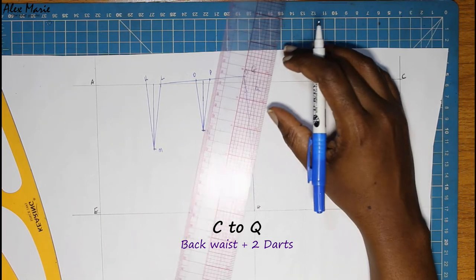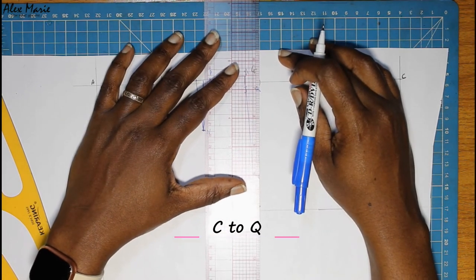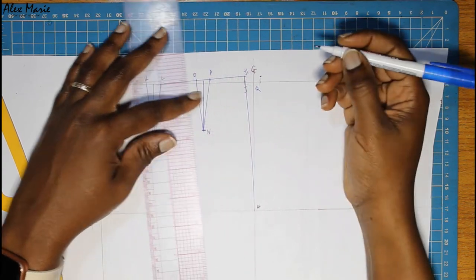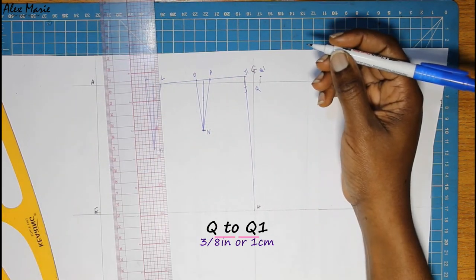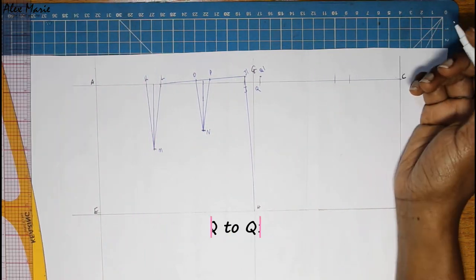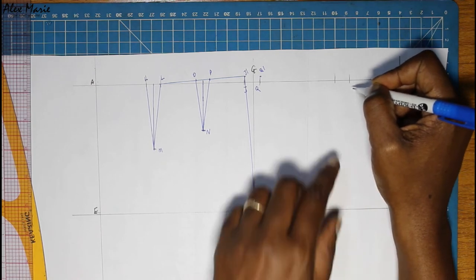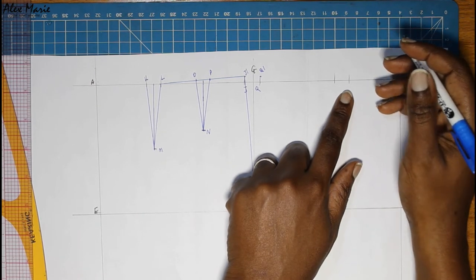From Q to Q1 is our shaping. We're going to put in a quarter of your cross back for the first dart leg, and then we're going to put in our dart measurements.